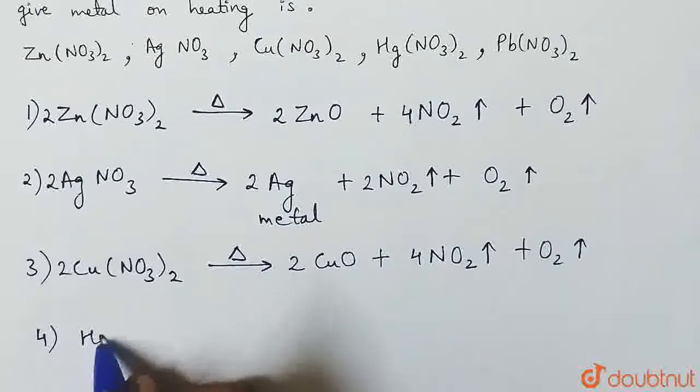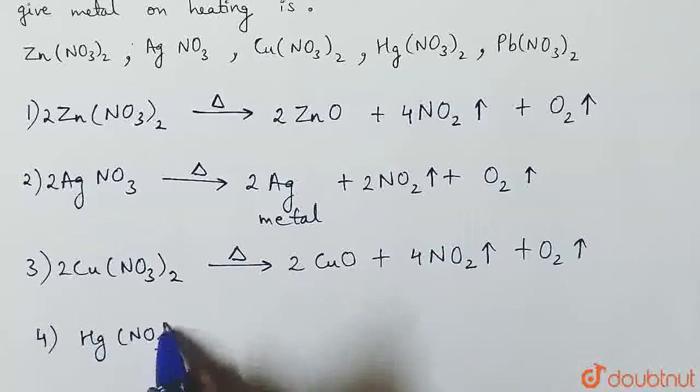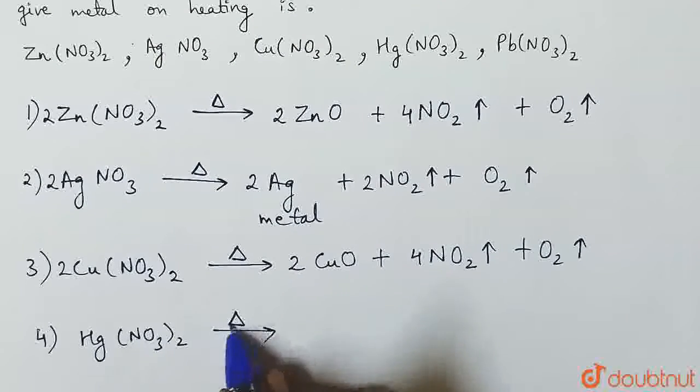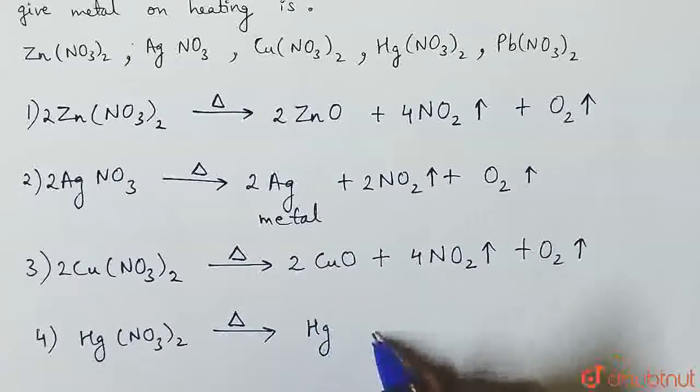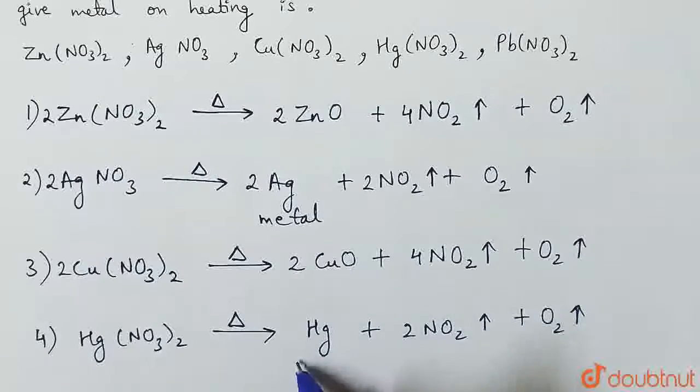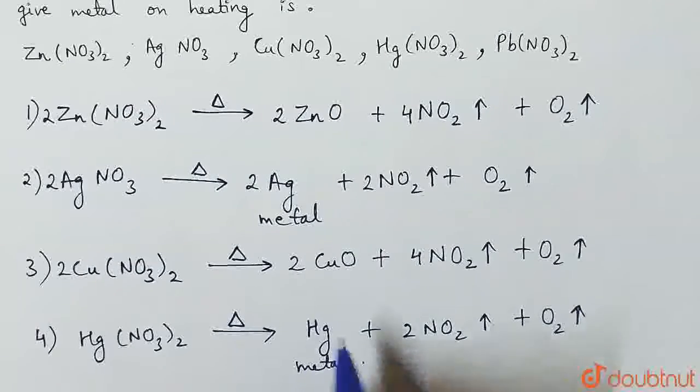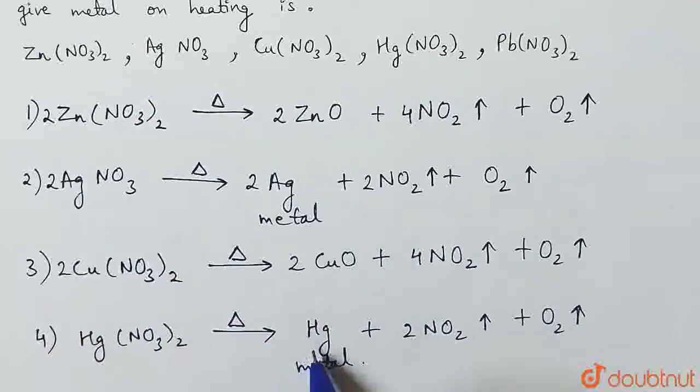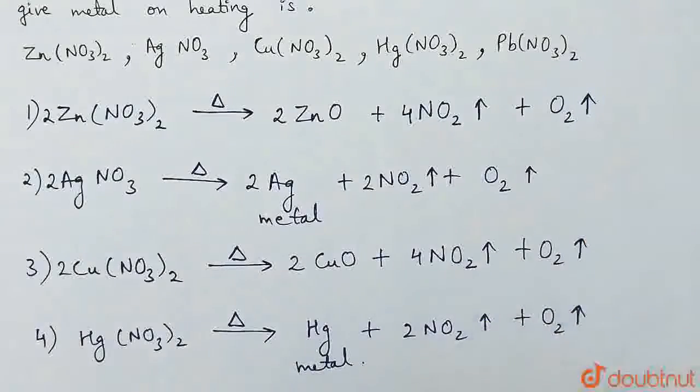Next mercury nitrate, Hg(NO3)2. Heat: mercury, nitrogen dioxide and oxygen gas. Here we have metal.